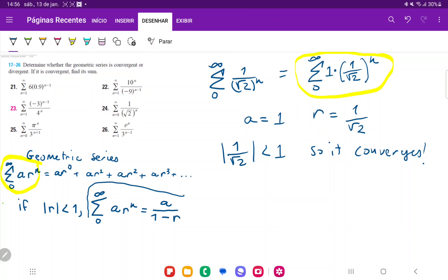Now, the formula for the sum is this guy right here. So we can say that the sum from 0 to infinity of 1 times 1 over square root of 2 to the power of n, that's going to be A, which is just 1 over 1 minus R.